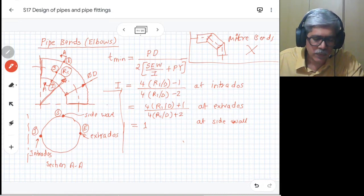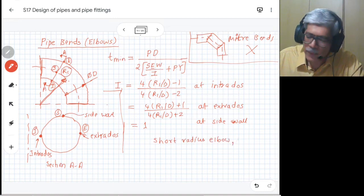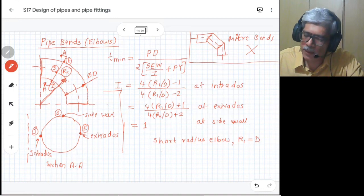For them, the ratio is already defined. For short radius elbow, the radius of bend equals the diameter. For long radius elbow, R1 is given as 1.5 times diameter.